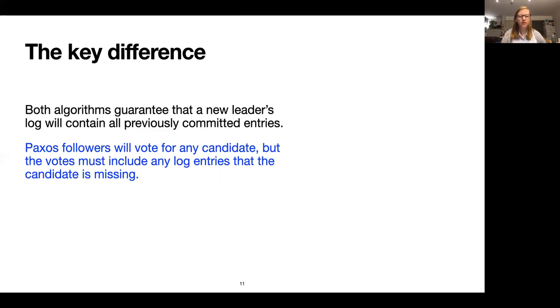In Paxos, a follower will vote for any candidate who asks for its vote, but the votes have to include any log entries that the candidate is missing. Once the candidate has votes from a majority of followers, it will use these entries that it received to update its log, and thus ensuring that it has any previously committed entries.